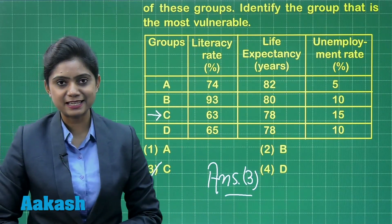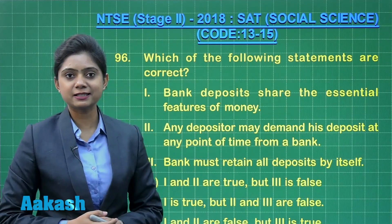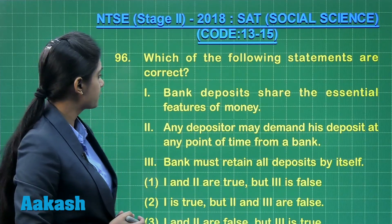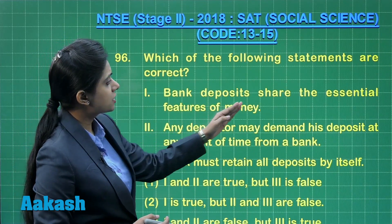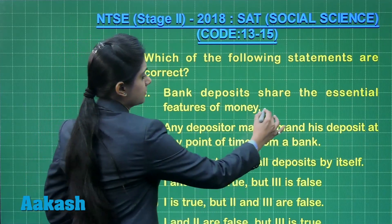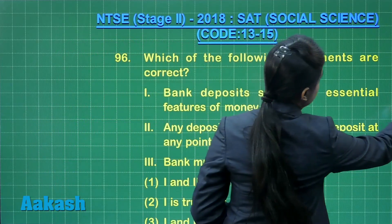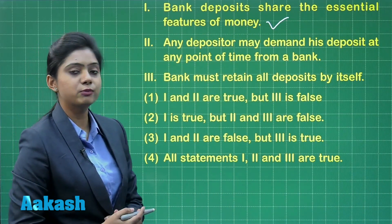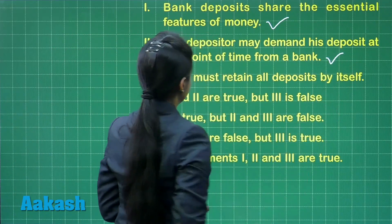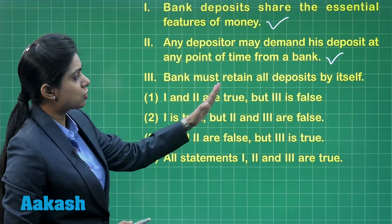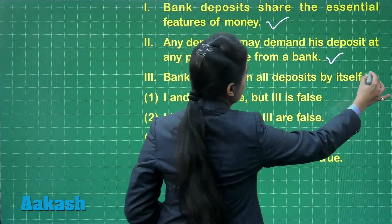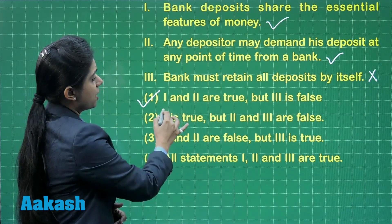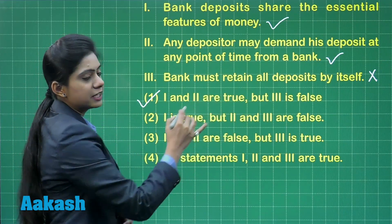Now let's discuss question number 96: which of the following statements are correct? The first statement says bank deposits share the essential features of money — a correct statement. The second statement says any depositor may demand his deposit at any point of time from a bank — also a correct statement. The third statement says a bank must retain all deposits by itself — this is an incorrect one.